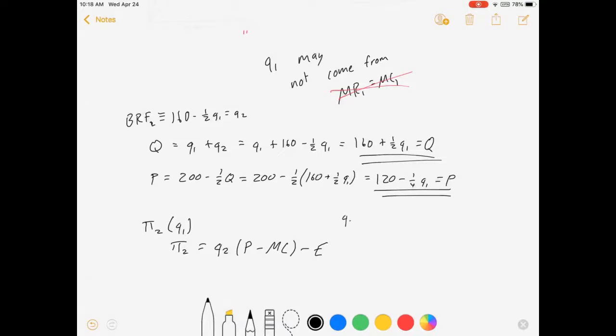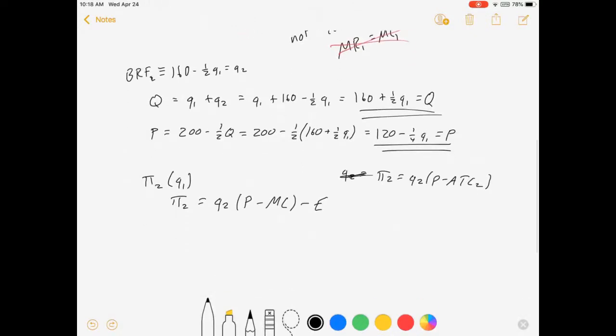Price is equal to 200 minus 1 half of Q equals 200 minus 1 half times 160 plus 1 half Q1, which means prices are going to be 120 minus 1 fourth Q1. So we've done nothing to talk about what firm 1 will actually do. We're just having the quantity and price based on whatever it does. With that in mind, we can solve for firm 2's profit as a function of Q1.